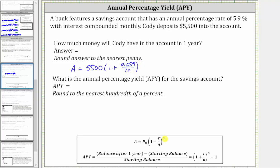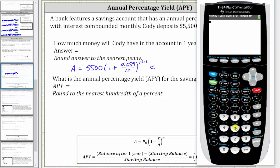And this is raised to the power of n times t, where again, n is 12, and t, the time in years, is one. Now we go to the calculator and round this to the nearest cent or nearest penny. We enter 5,500 times the quantity one plus 0.059 divided by 12, and this is raised to the power of 12 times one, or 12. We press the exponent key, 12, and then enter.